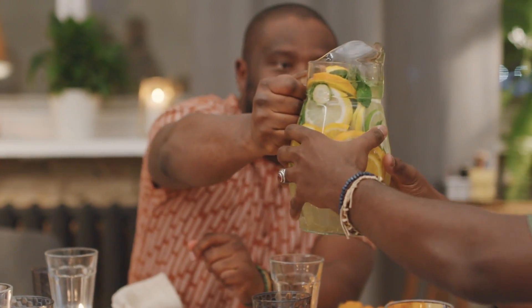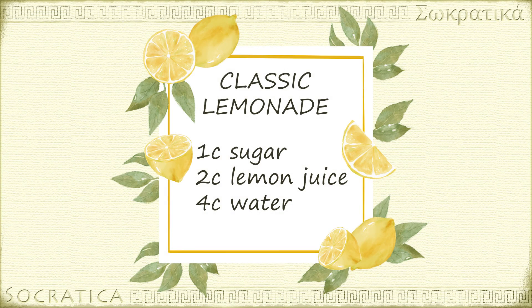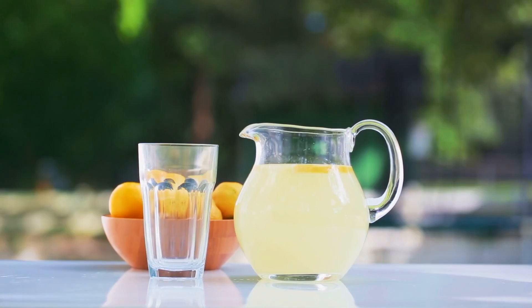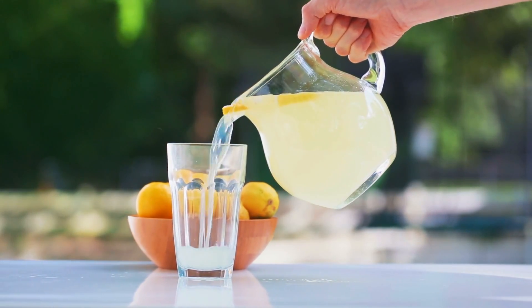Another real-life example of a mixture where the composition varies is lemonade. There isn't a set formula for making lemonade, although everyone thinks their recipe is the best. One classic recipe follows the ratio 1 to 2 to 4: 1 cup sugar, 2 cups lemon juice, 4 cups water. My recipe is 2 tablespoons of sugar, 2 cups of lemon juice, 4 cups of water. My lemonade is tart, but we still call it lemonade. It's a mixture.